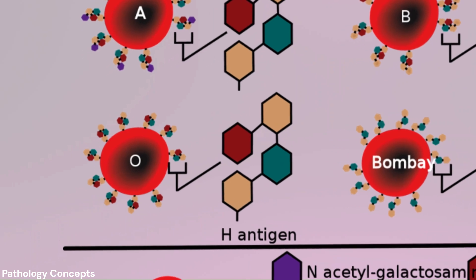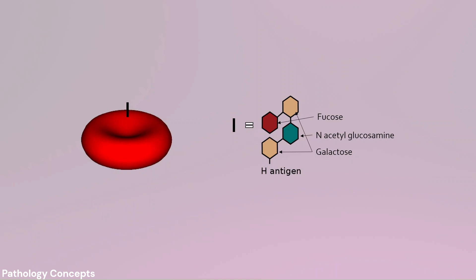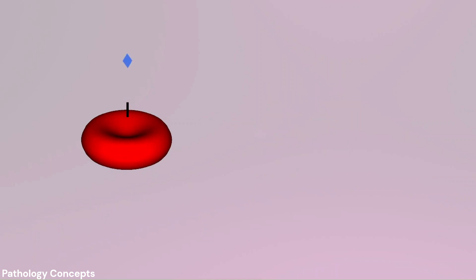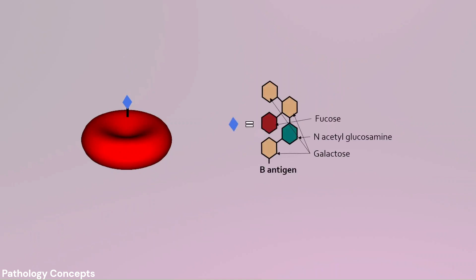The H antigen is produced by specific fucosyl transferase. Depending upon the person's ABO type, the H antigen is converted into either A antigen, B antigen, or both. If the person has blood group O, the H antigen remains unmodified. The H antigen involves fucose, acetyl glucosamine, and galactose. When an acetyl galactosamine attaches to H antigen it becomes the A antigen, giving rise to A blood group.